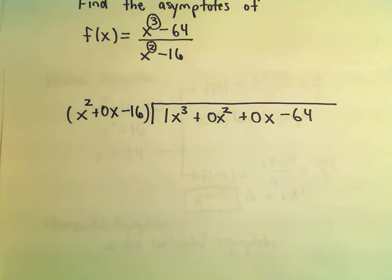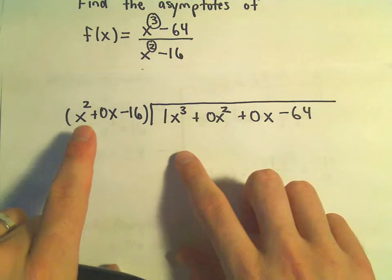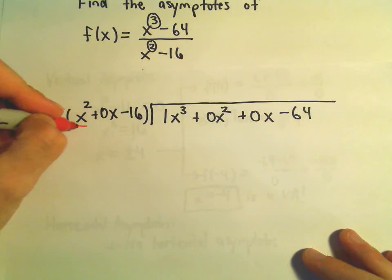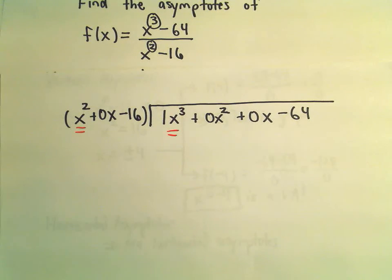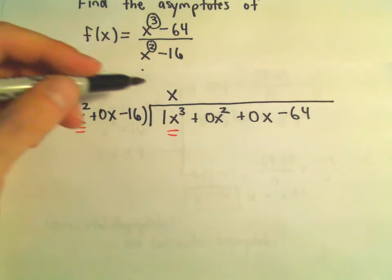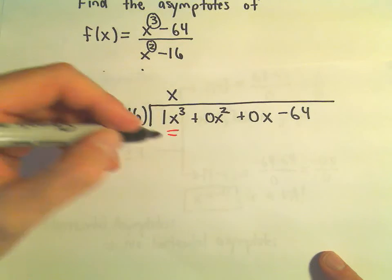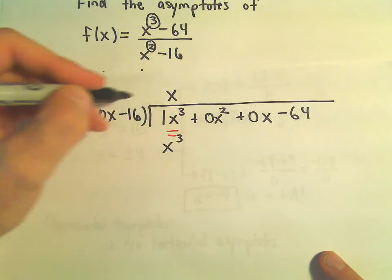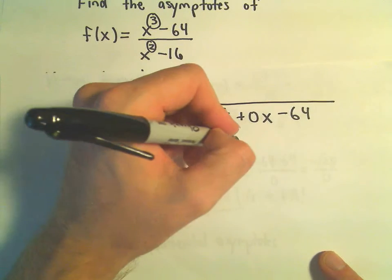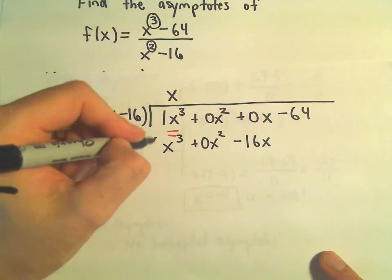And now I'm just going to do my long division to find the equation of the oblique asymptote. So I think x, I'm basically just looking at the highest powers. So I'm thinking x squared times what is x cubed? Well, I think we would need an extra x. Then I distribute this to everybody. So we would have x cubed. We would still have 0x squared. x times negative 16 would be negative 16x.